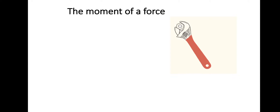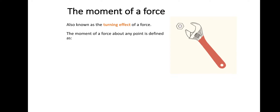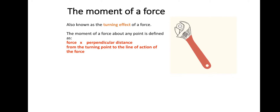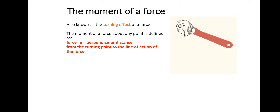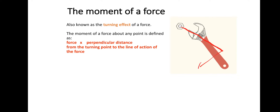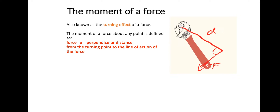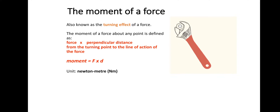So what is the moment of a force? It's also known as the turning effect. The moment of a force about any point is defined as the force multiplied by the perpendicular distance from the turning point to the line of action of the force. Let's draw a little diagram. So if that's my original distance, and then apply a force in this direction at 90 degrees, then that's the force F multiplied by the perpendicular distance. Perpendicular just means they're at 90 degrees to each other.